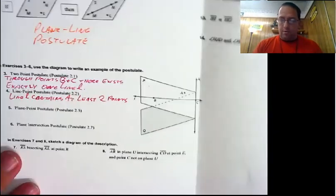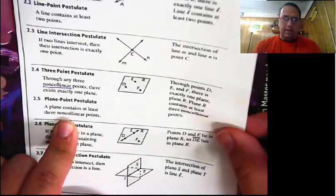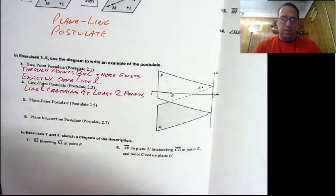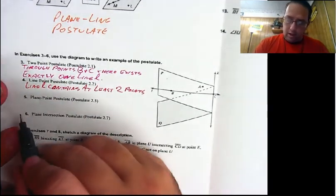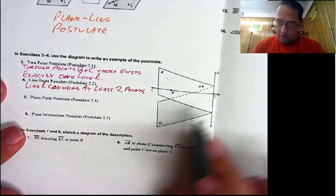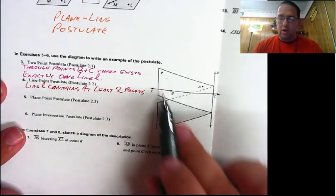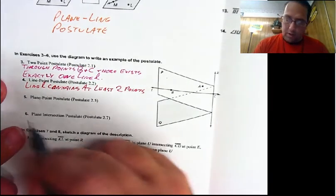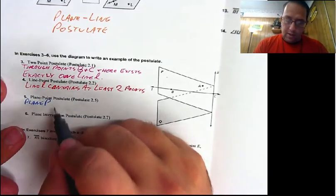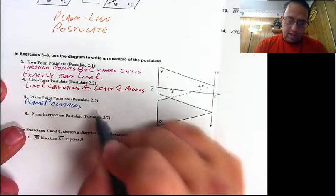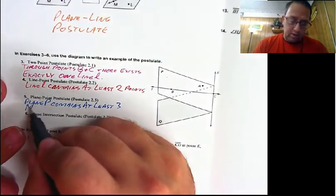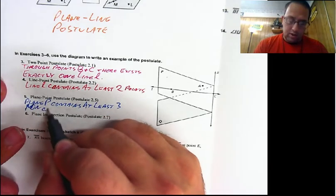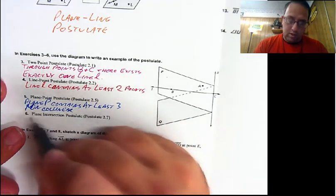What do we have next? The plane-point postulate. A plane contains at least three non-collinear points. Much like the line-point postulate, only this is for planes, and planes have three points, not two — because they have to be non-collinear, and only two points will be collinear. What plane can we use? We have plane Q, but there's only one point shown there, so let's use plane P, because it has those three points shown. So: plane P contains at least three non-collinear points.